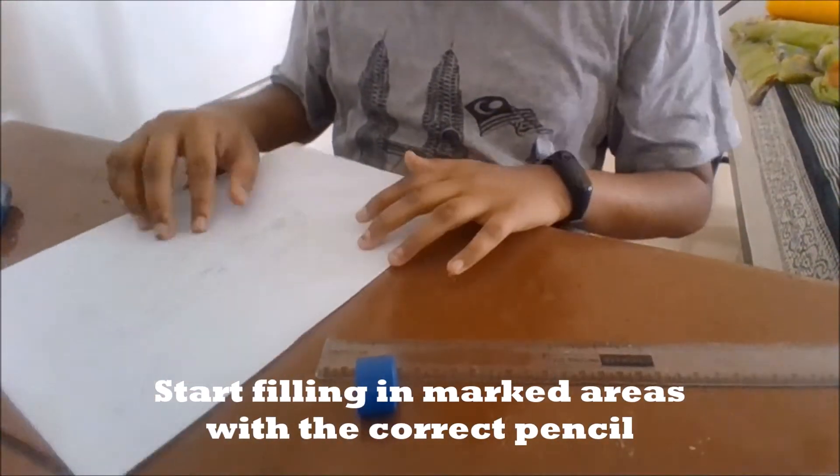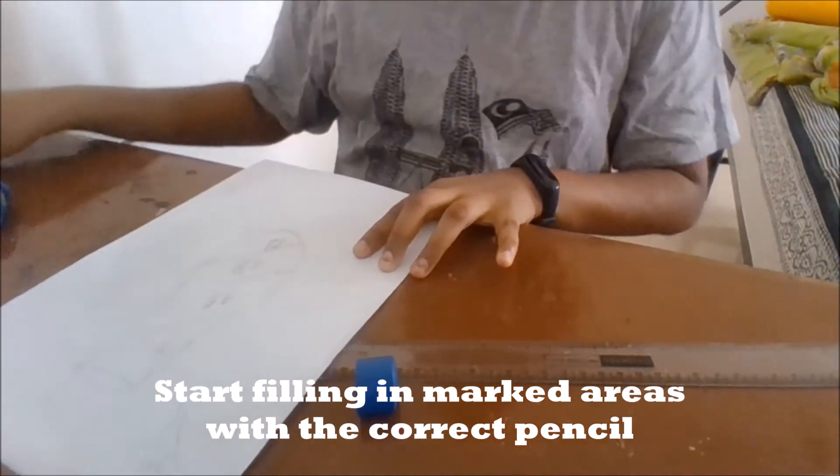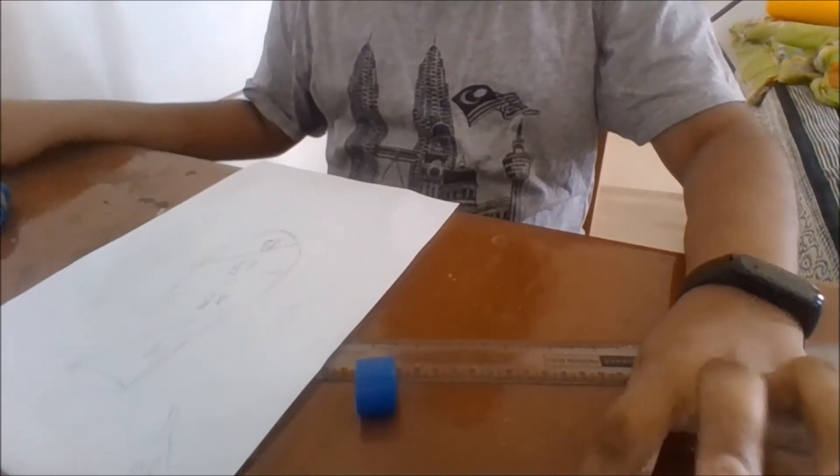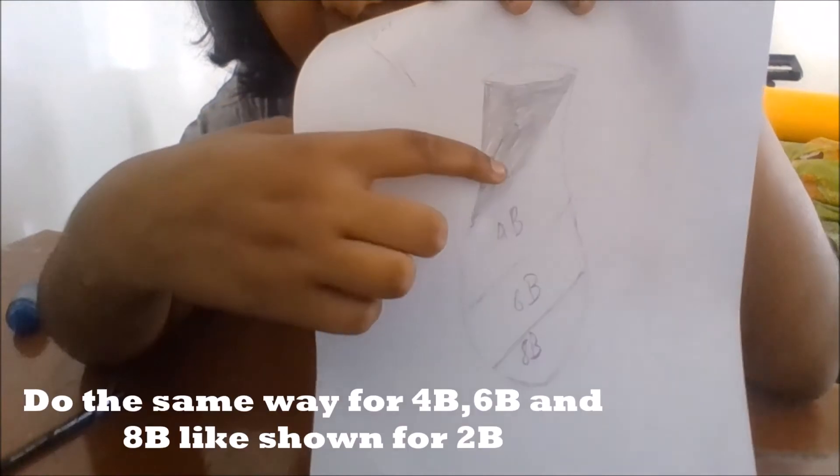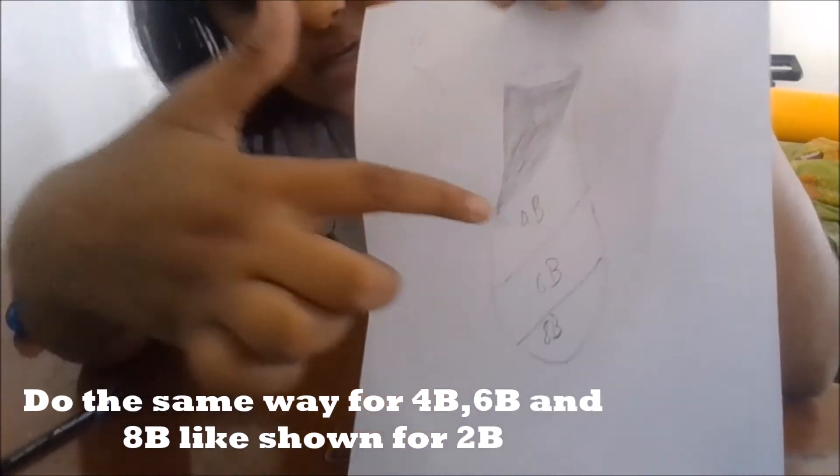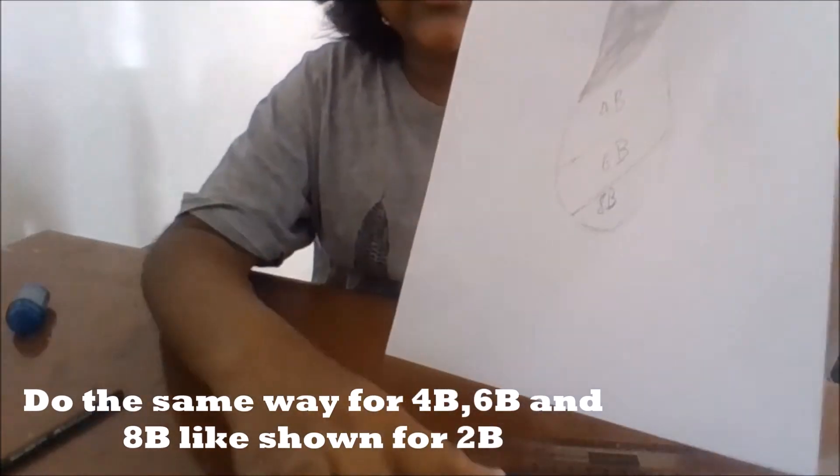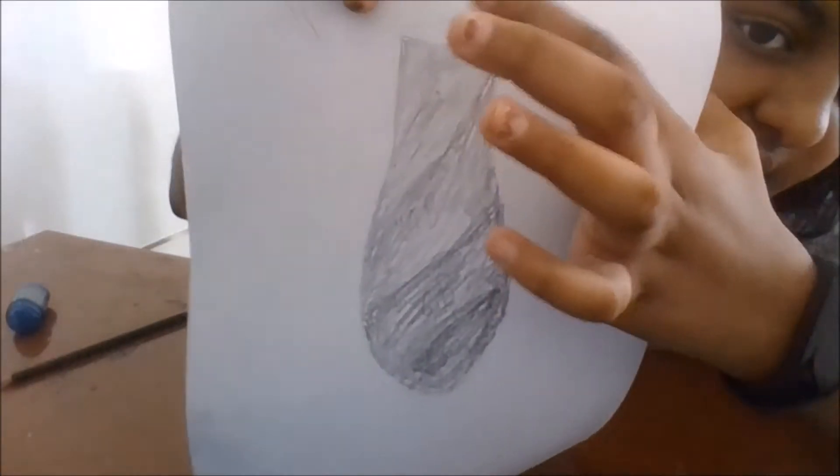Now start filling in the marked areas with the correct pencil. Okay, we have finished the 2B shading process. You want to do the same way for the 4B, 6B, and 8B pencil. Okay, we are done with the shading of the 4B pencil.